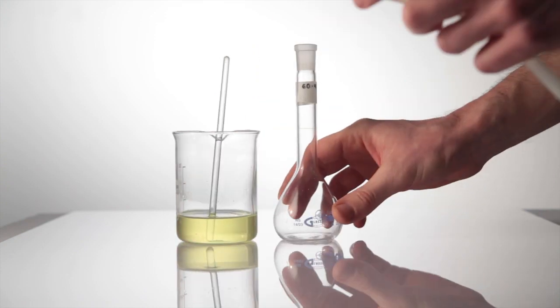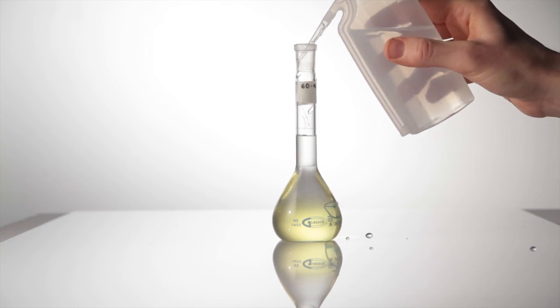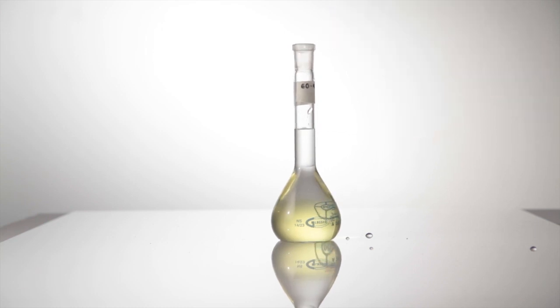Transfer the solution to the volumetric flask and rinse the beaker, funnel and stirring rod a couple of times to ensure that all of the solute is now in the volumetric flask. Top up with deionized water to the line before recording the mass of the flask once more. And don't forget to invert it a few times to thoroughly mix.